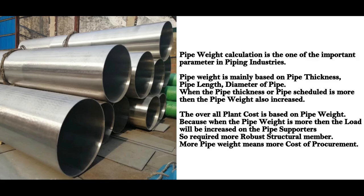Pipe weight calculation is one of the important parameters in piping industries. Pipe weight is mainly based on pipe thickness, pipe length, and diameter of the pipe. When the pipe thickness or pipe schedule is more, then the pipe weight also increases.